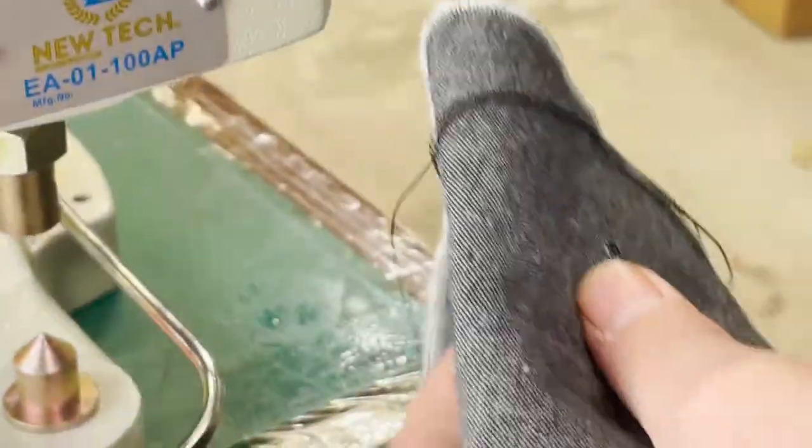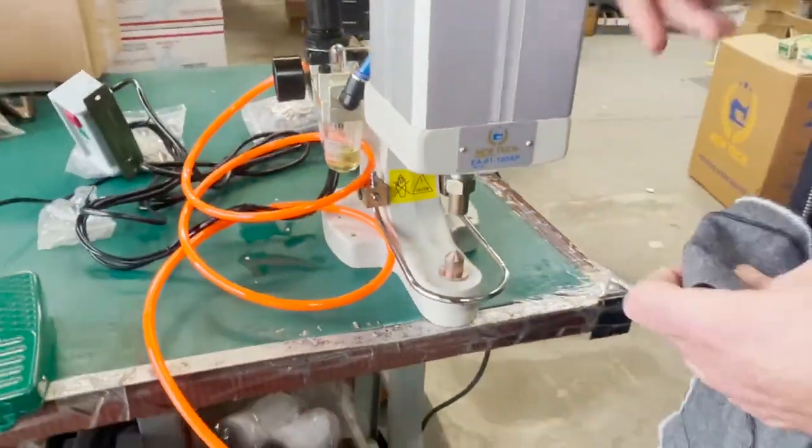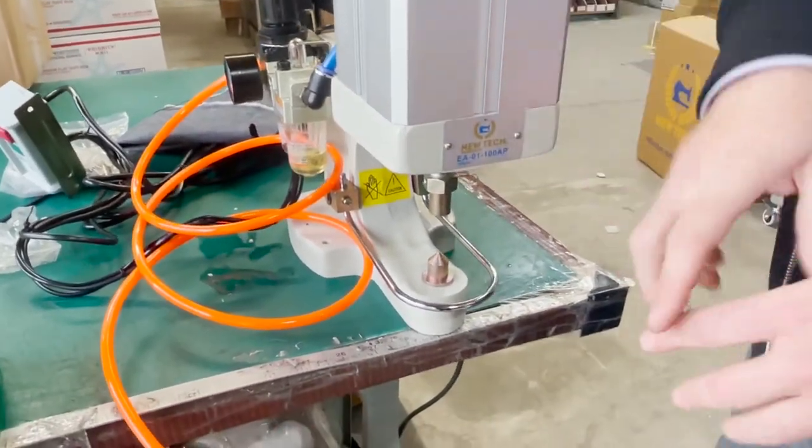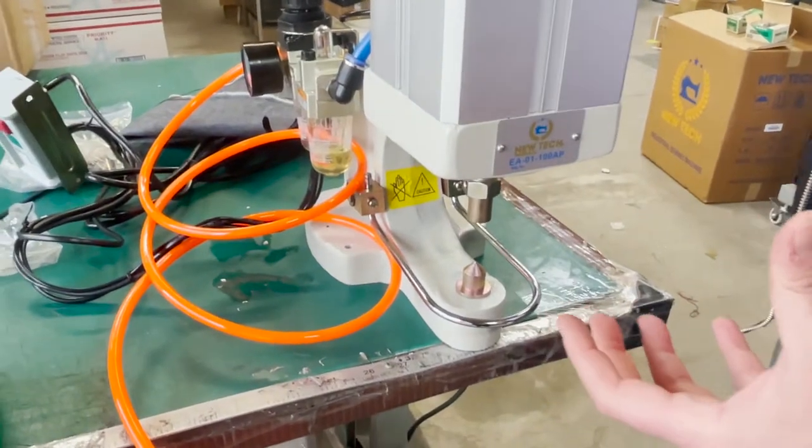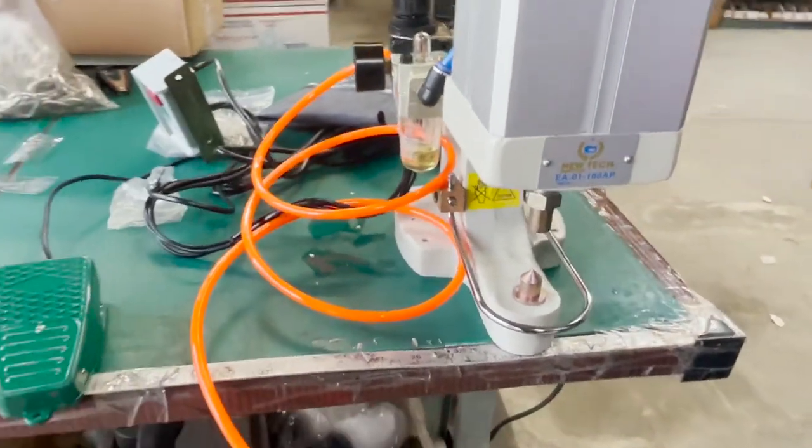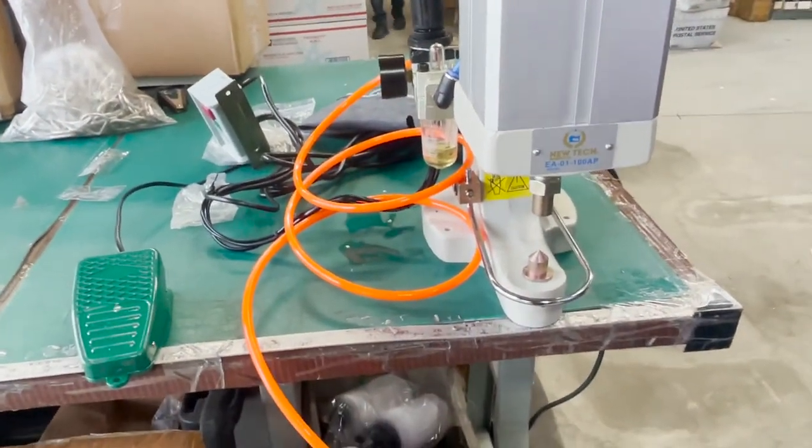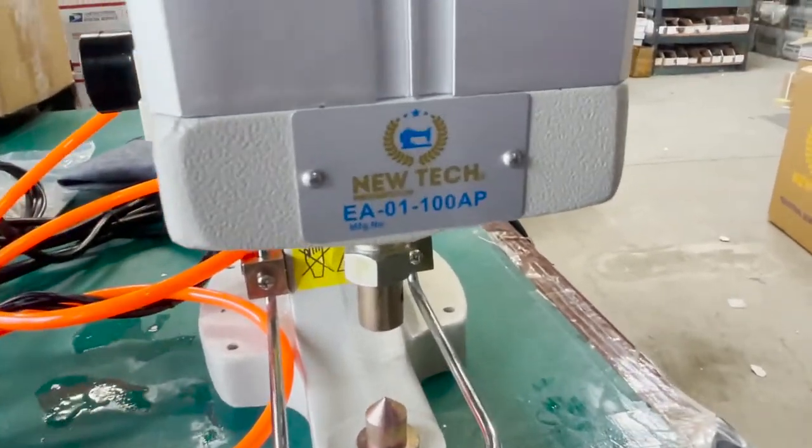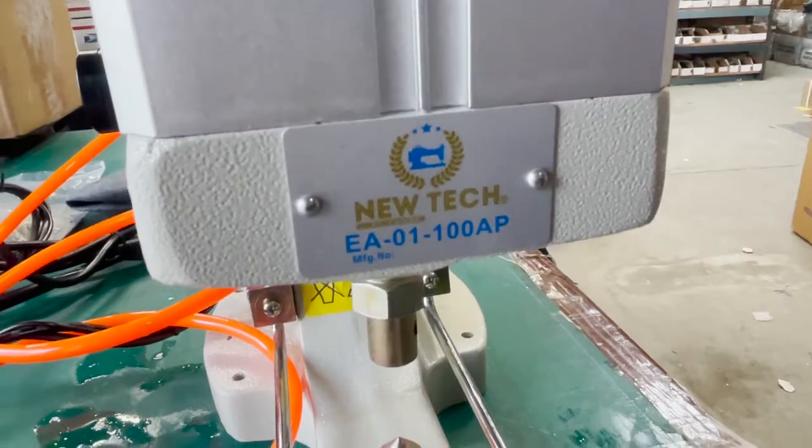That's it. So this machine could do grommet, eyelet, rivet, snap, all that stuff. And then we have one unit that is three head, and we have one unit that is really heavy duty for curtain and drapery. David from goldstartool.com, thank you for watching and have a wonderful day. Bye.